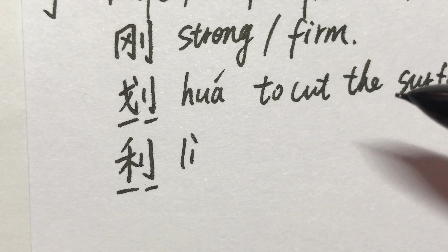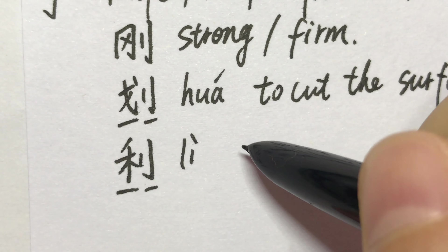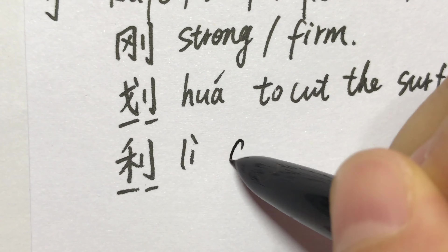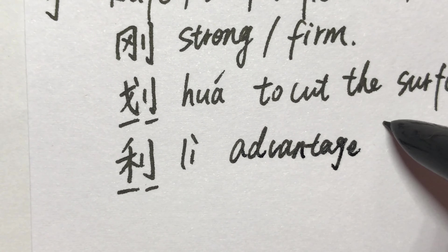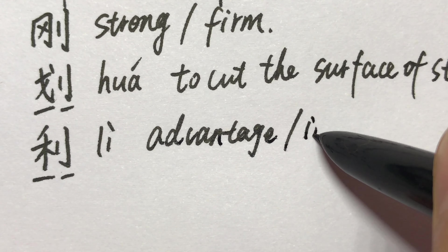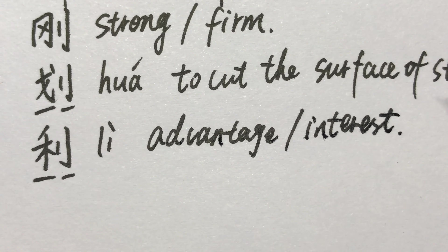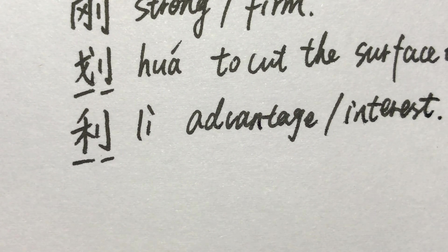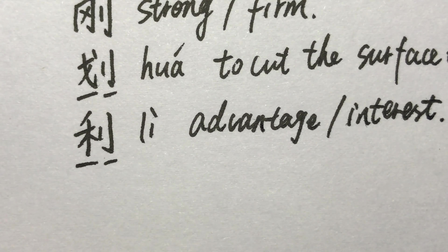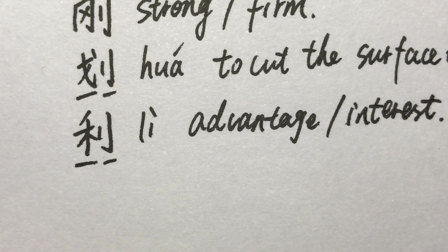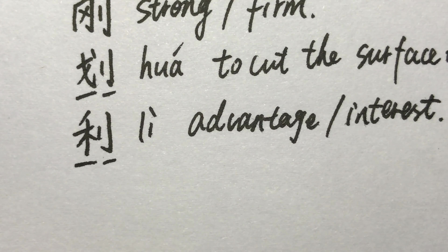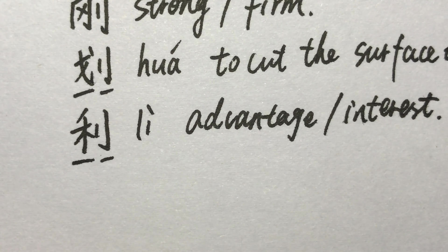So 利 also means advantage or interest. For example: 每家公司都在奋力保护自己的商业利益。 Each company is fighting to protect its own commercial interests. 利益 means interest.